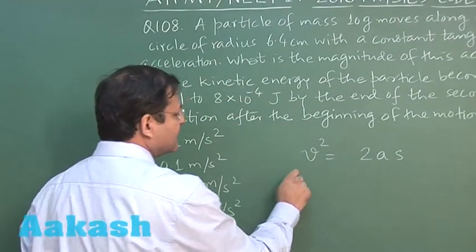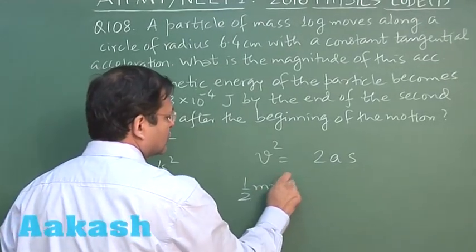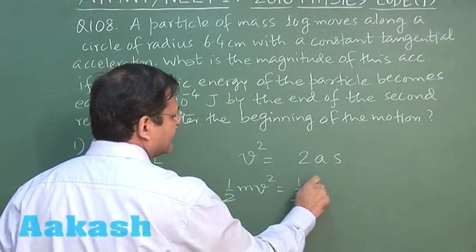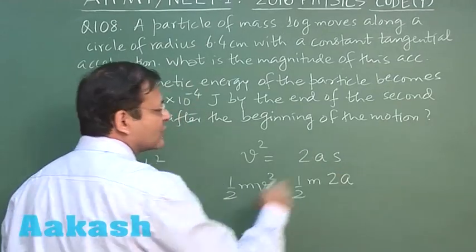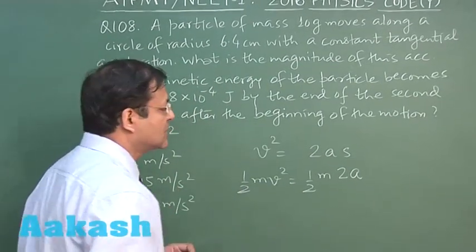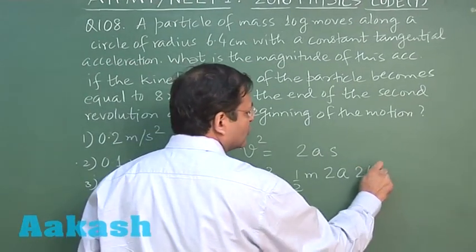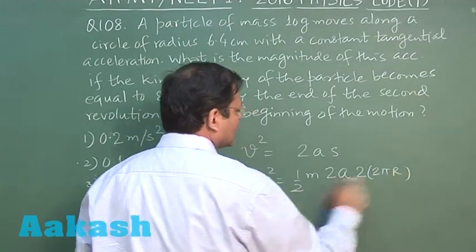u initial is 0. If you apply half mv², here also I am multiplying as half m times 2As. Instead of s you have 2 revolutions. 2 revolutions means 2 × 2πr. This is what you have to calculate.